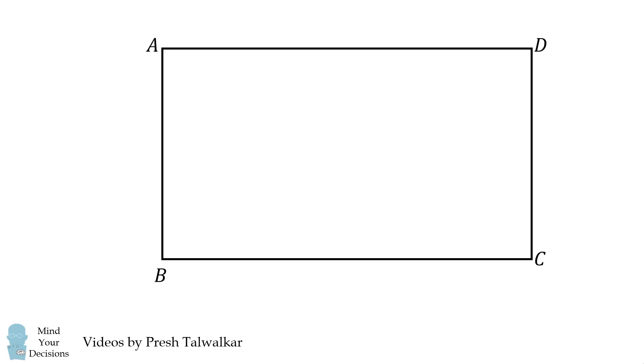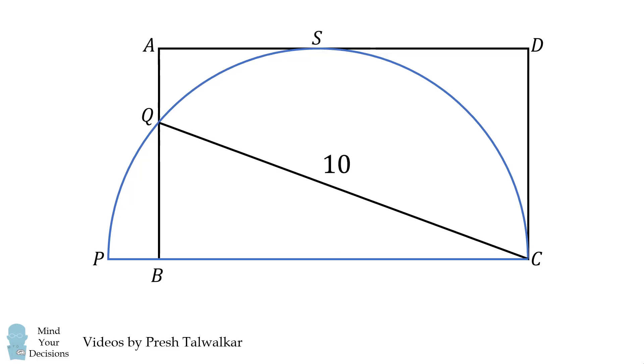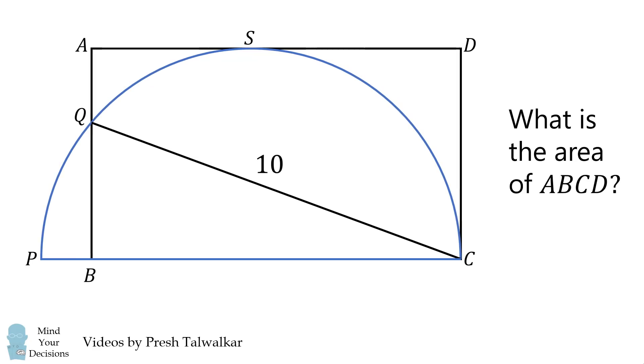Start with rectangle ABCD. Construct an overlapping semicircle CPS as shown. If CQ has a length equal to 10, the question is what is the area of rectangle ABCD?